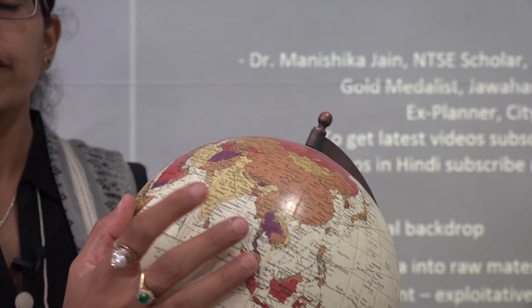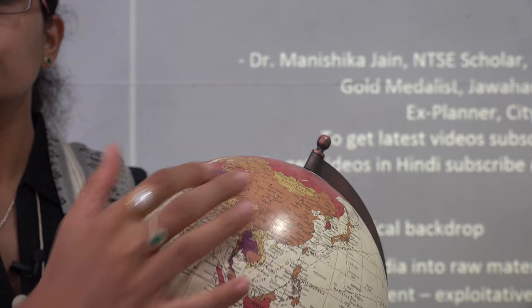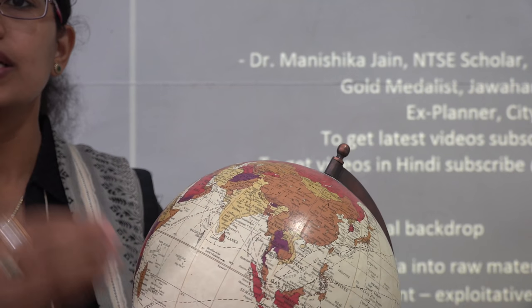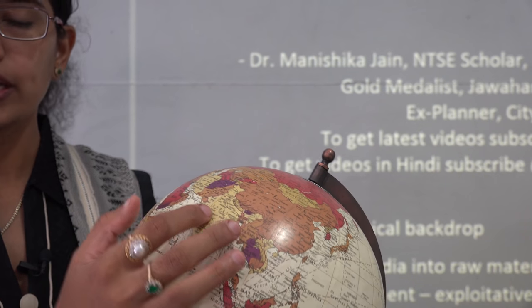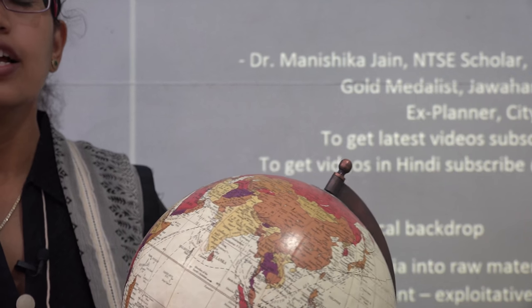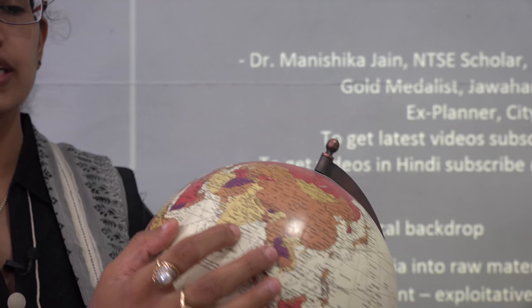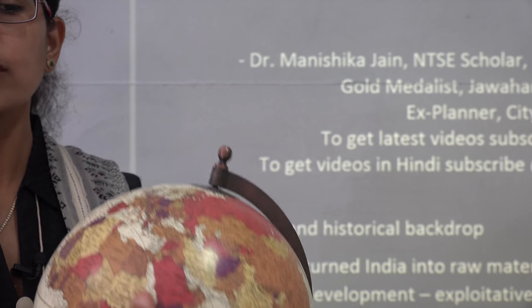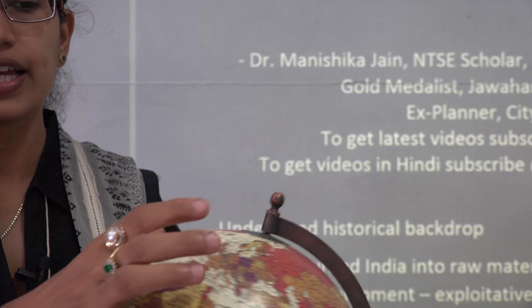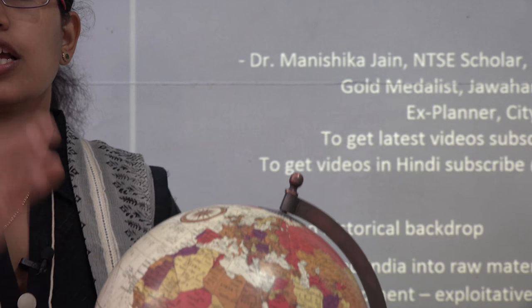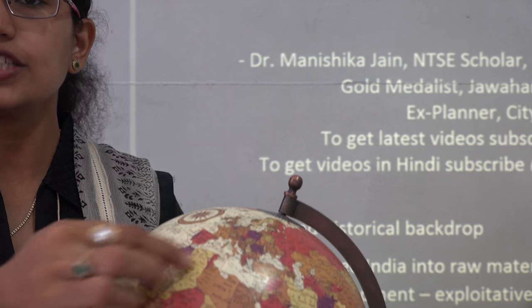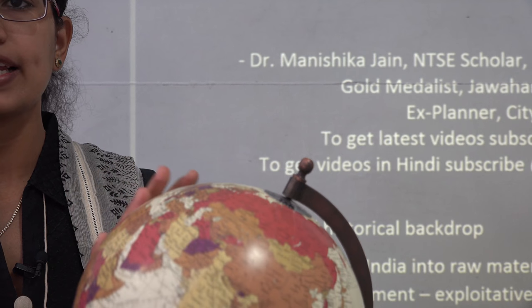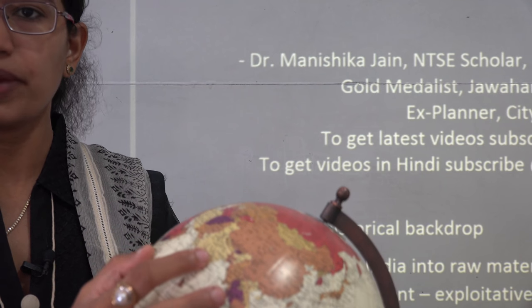Britishers were very interested in India because during that time India was very rich in agriculture. There were numerous handicrafts in the form of small cotton industries, textile, and metal work that was prevalent. Most of the raw materials became the source for the industrial revolution that took place in the European nations, which required cheap raw material and could get it from India.